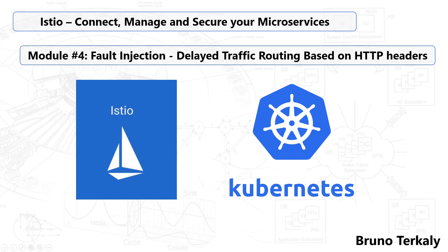This is module four, a module about Istio on Kubernetes, specifically about fault injection. Ultimately, it's about preventing a poor user experience because of slow responding services. It's about intentionally delaying traffic routing so that we can test the performance of our applications.